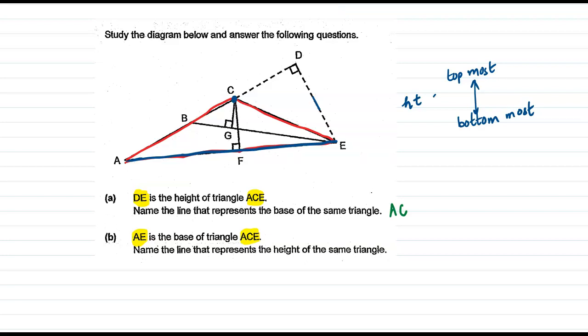Now we can see one perpendicular has been dropped from C, which is the topmost point, to the bottom most point which is reaching the base AE at F. So CF is the height.